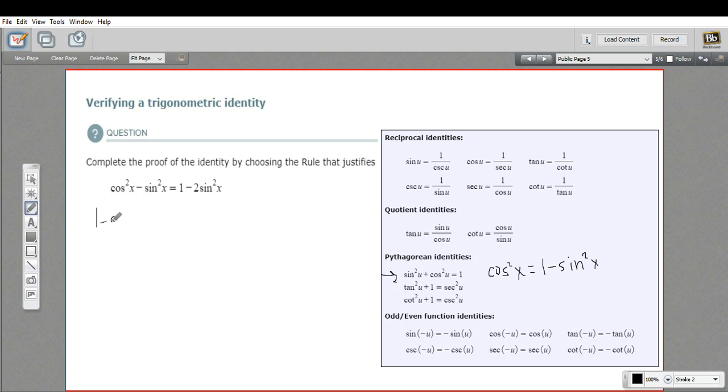1 minus sine squared x, and then we have our minus sine squared x. Okay. And what did we do there? Well, we used a Pythagorean identity.